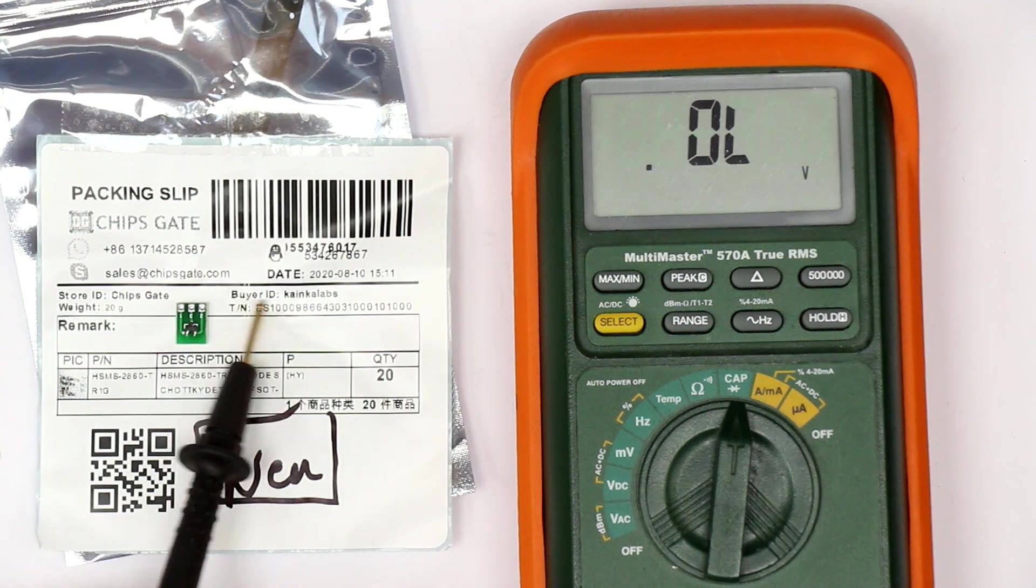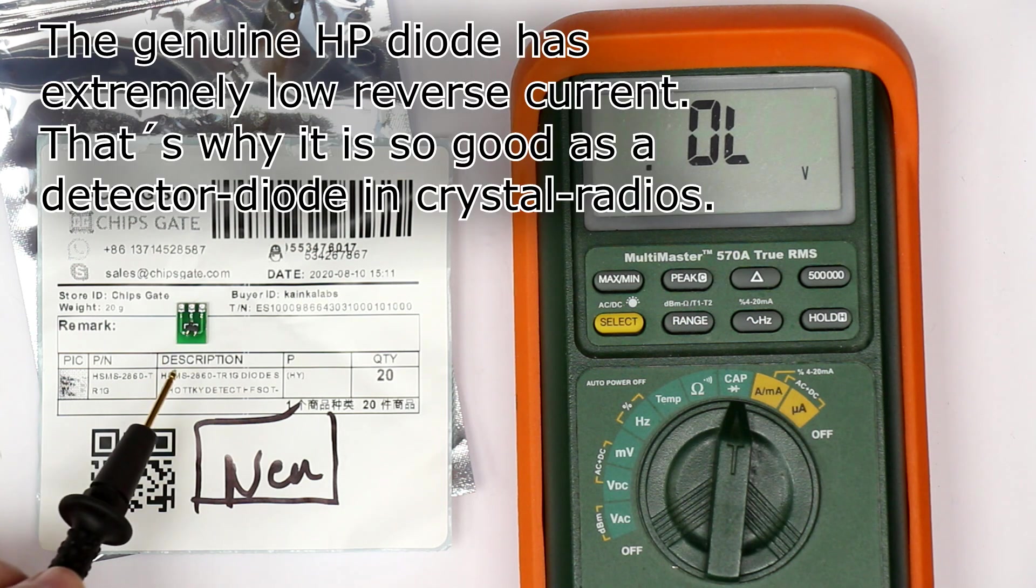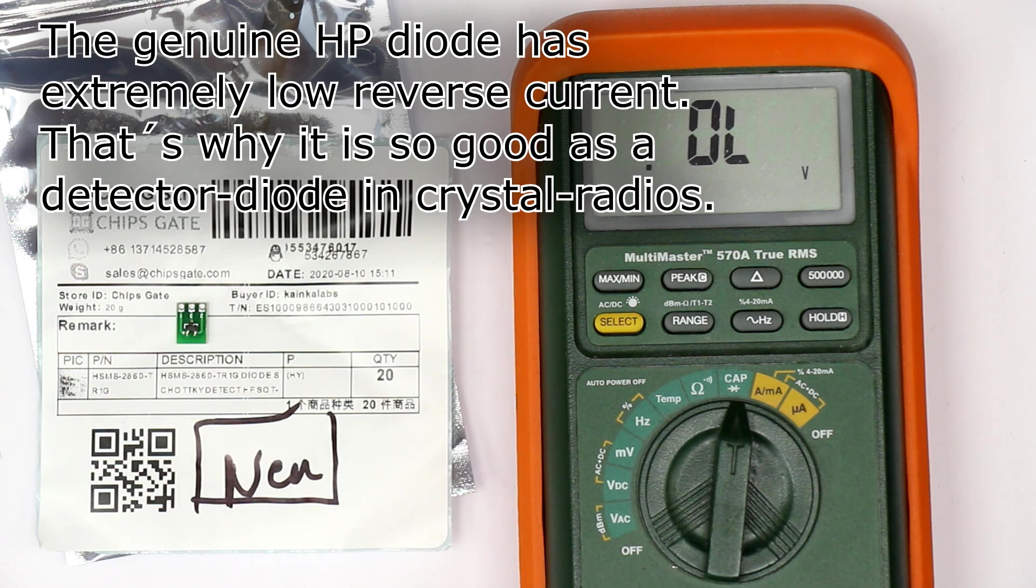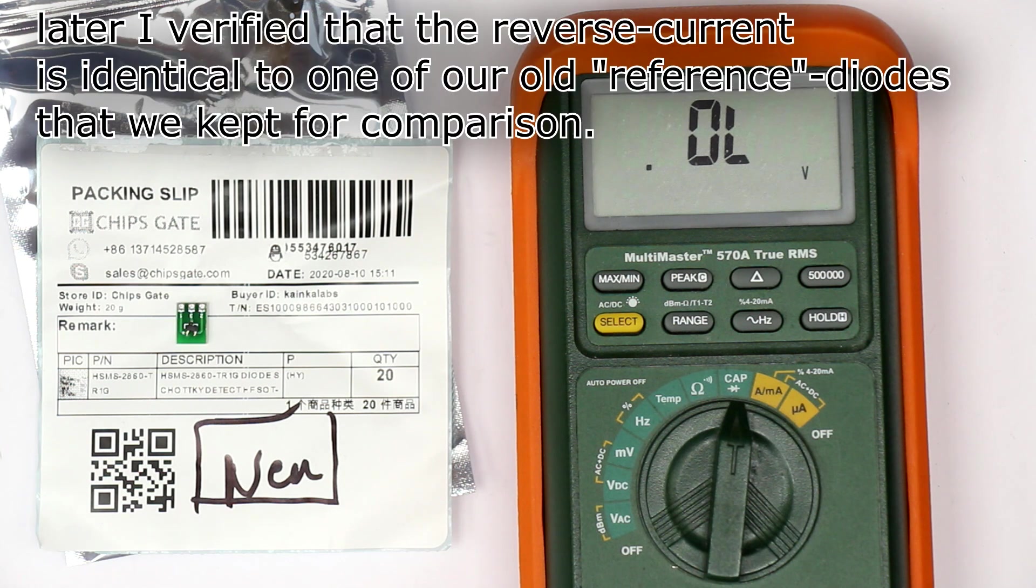The designation is correct. You can even see this is our order here by ID Kanker Labs. But I have to check the reverse current. This must be in the sub-nanoamps region to prove that this is the genuine Hewlett-Packard or Agilent diode and not a fake again, this time a better fake with a correctly orientated Schottky diode.